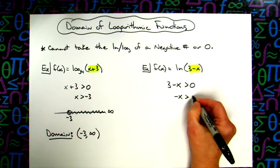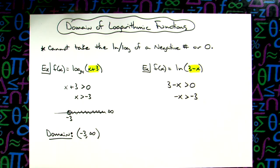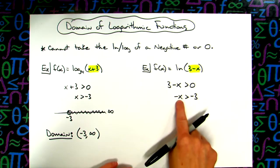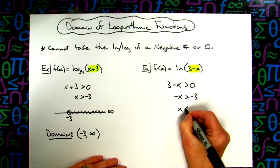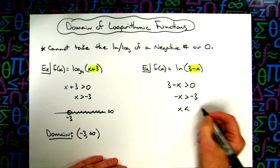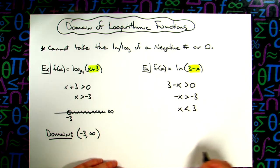Negative x is greater than negative 3. I'm going to remember that I've got to solve all the way down for x, and I'm going to divide both sides by that negative 1 coefficient. When we do that, it flips the inequality sign, and then I get a positive 3 over there.